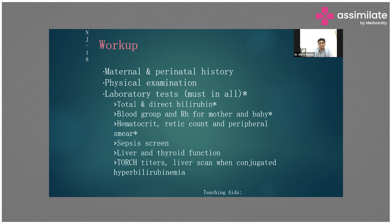If we suspect Rh incompatibility, we need to ask whether anti-D immunoglobulin was given or not, any history of thyroid, any history of diabetes, any history of blood group mismatch like ABO incompatibility, history of TORCH screening, history of vaccination in antenatal care, or history of any fever during the pregnancy.